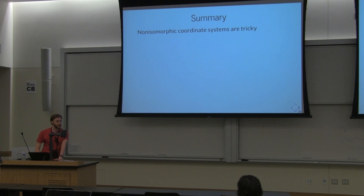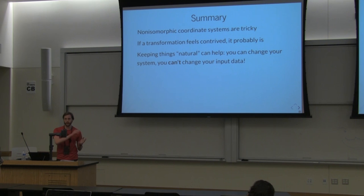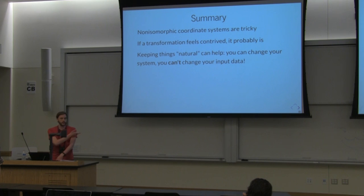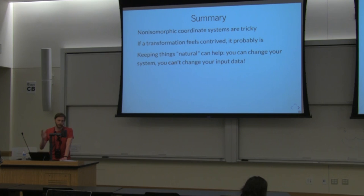To summarize this section: non-isomorphic coordinate systems are tricky, and if a transformation feels contrived, it probably is. One thing that can help is trying to keep things natural. You can change your system but you can't change your input data. In a visualization tool, the structure of the data you have is actually one of the most important parts. If the data you have has some inherent structure, you should consider using it. In my case, it was evolution that came up with the structure, so I'm pretty confident in using it.